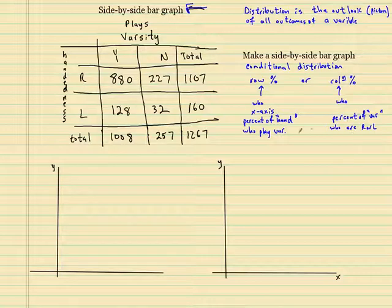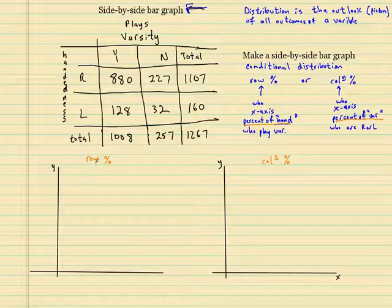For me, I always throw the who on the x-axis. So if I said the row percents is the percent of handedness who play varsity sports, the column in this case would be the percent of the people who play varsity sports who are right or left-handed. There's a big difference. And the who goes on the x-axis. So as long as you can tell who, this is always the who right here. The percent of who you're interested.